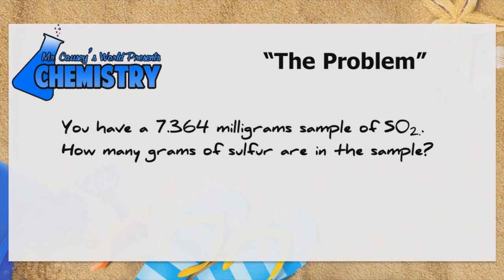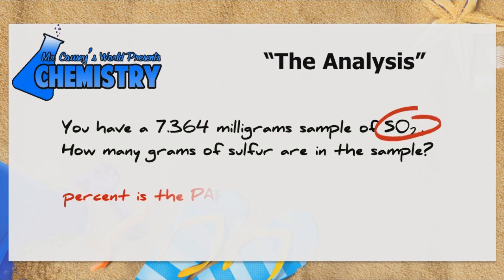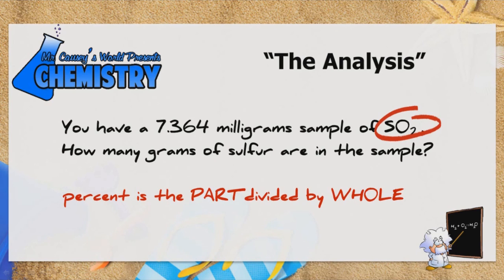Let's analyze the problem. The first thing I note is that we have milligrams, but they want the answer in grams. So let's go ahead and change milligrams to grams — move the decimal three times to the left. Now let's analyze our sulfur dioxide. Sulfur dioxide is part sulfur and part oxygen, those are the only two elements. A percent is just a part divided by the whole, so sulfur is the part and sulfur dioxide is the whole.